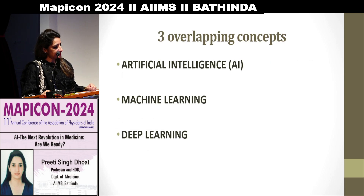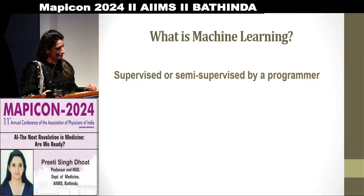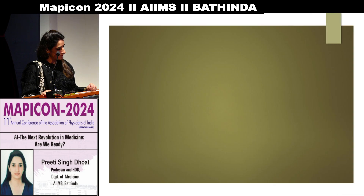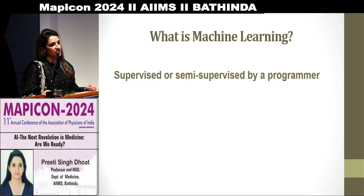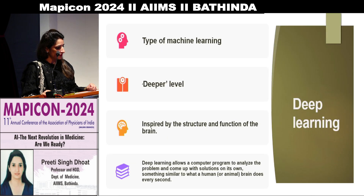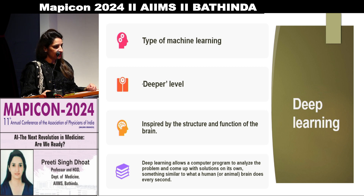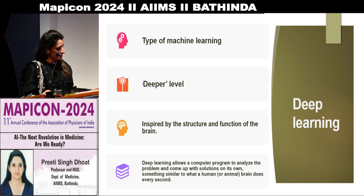There are three overlapping concepts in artificial intelligence: artificial intelligence, machine learning, and deep learning. Machine learning is something that is supervised or semi-supervised by a programmer. Deep learning is a type of machine learning which acts at a deeper level, inspired by the structure and function of the brain. It allows a computer program to analyze a problem and come up with a solution on its own, similar to what a human or animal brain does every second.